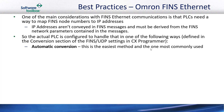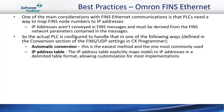The first method is the automatic conversion method, and this is the easiest method and the one most commonly used. The IP address table method is where the IP address table in the controller explicitly maps nodes to IP addresses in a delimited table format, allowing customization for most implementations. The third option is the combination method, which uses both automatic conversion and the IP address table.